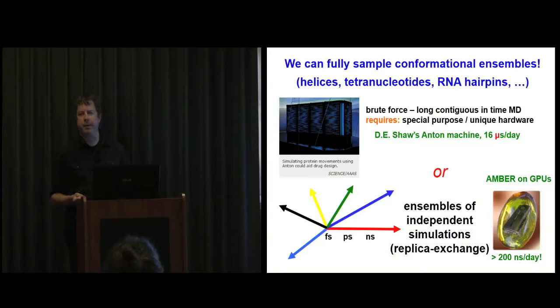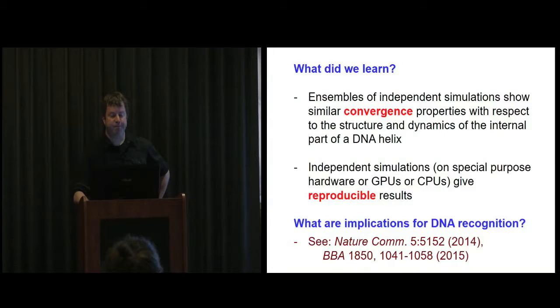Through access to Blue Waters, we could get similar results between independent simulations aggregating the results compared to longer simulations. AMBER on GPUs is fast, so we get more than 200 nanoseconds a day. That's going to double or more with the new generation of NVIDIA GPUs, compared to 16 microseconds a day on David Shaw's Anton machine. So you don't need that many GPUs to match the power of Anton if the ensemble approach works.